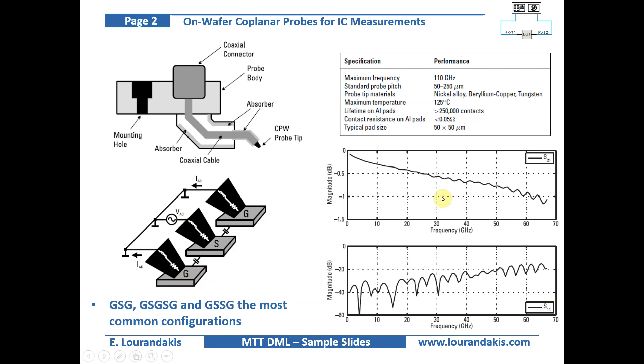On the lower right we see a typical RF transmission and reflection response for a GSG probe with a typical insertion loss of about 1 dB at 60 GHz.